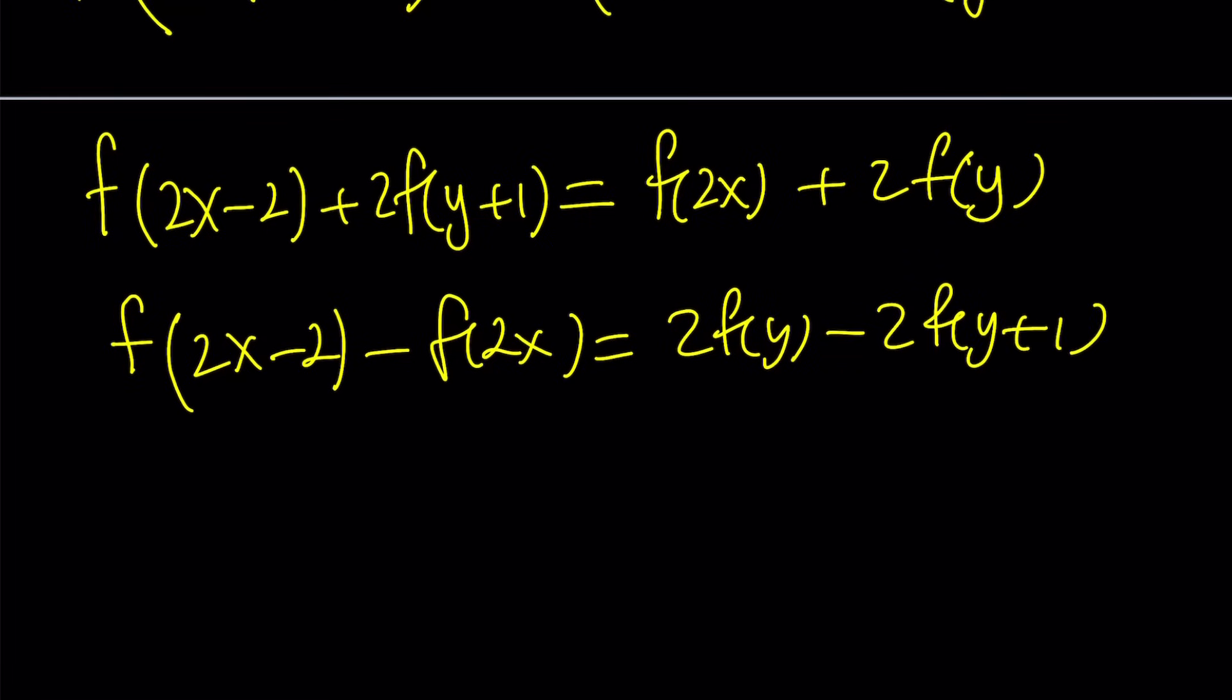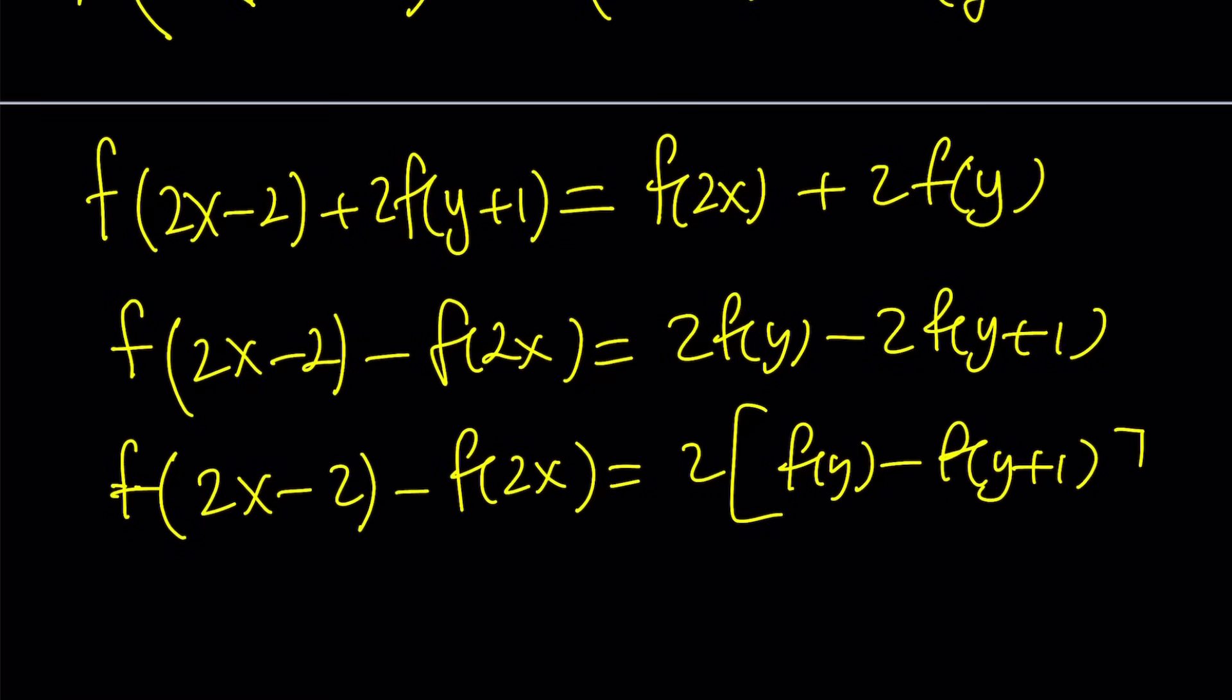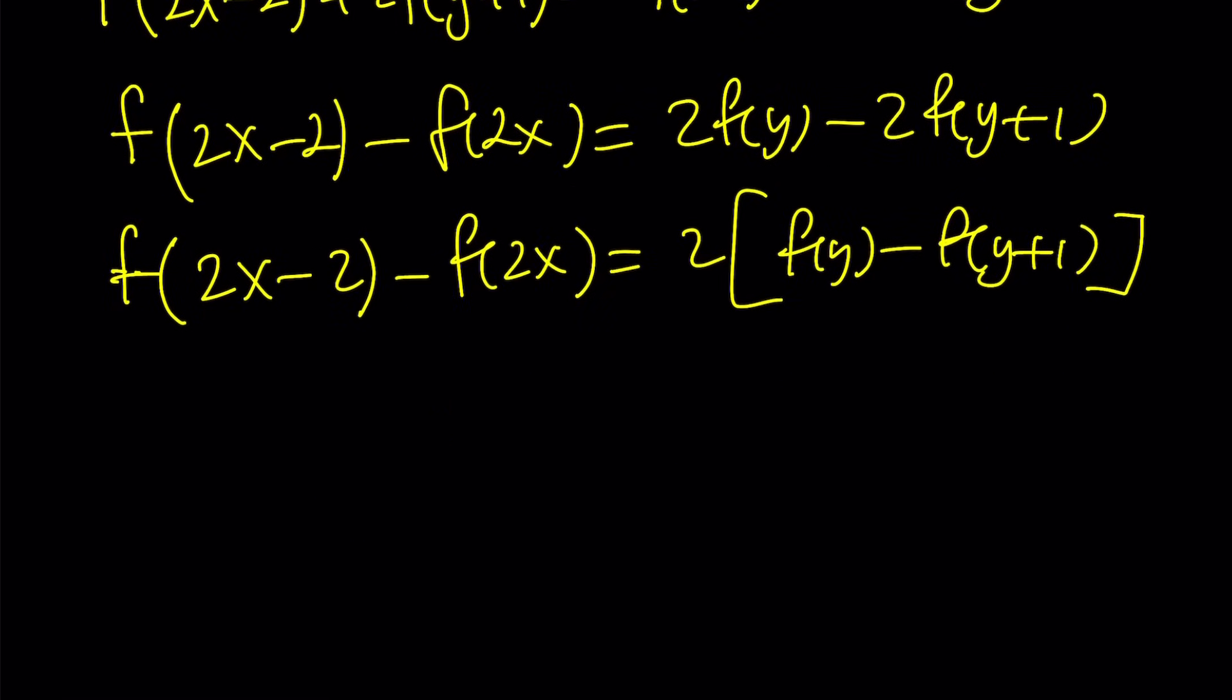Let's arrange this a little bit. Let's put the x's together and the y's together. Now we have the different variables on different sides, so that's good. Let's factor out a 2. And now we're going to get a 2 on the outside. This difference is going to be significant, f(y) - f(y+1).